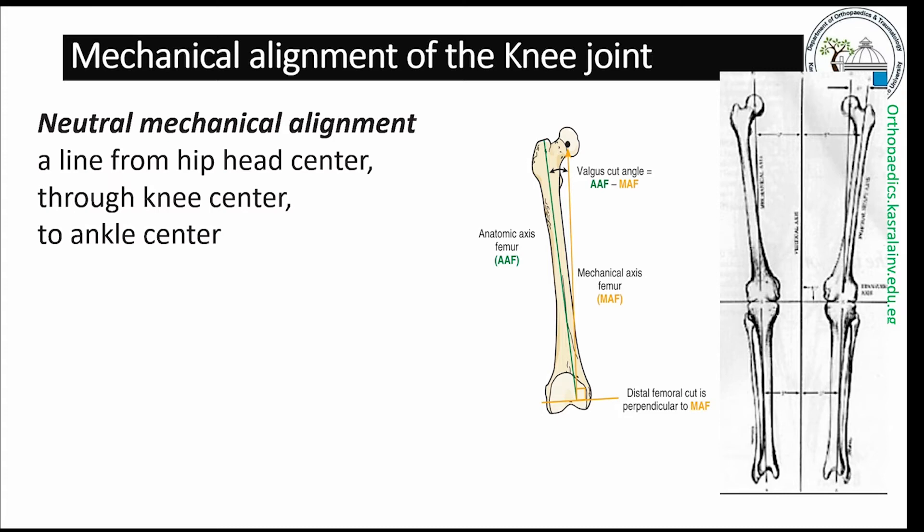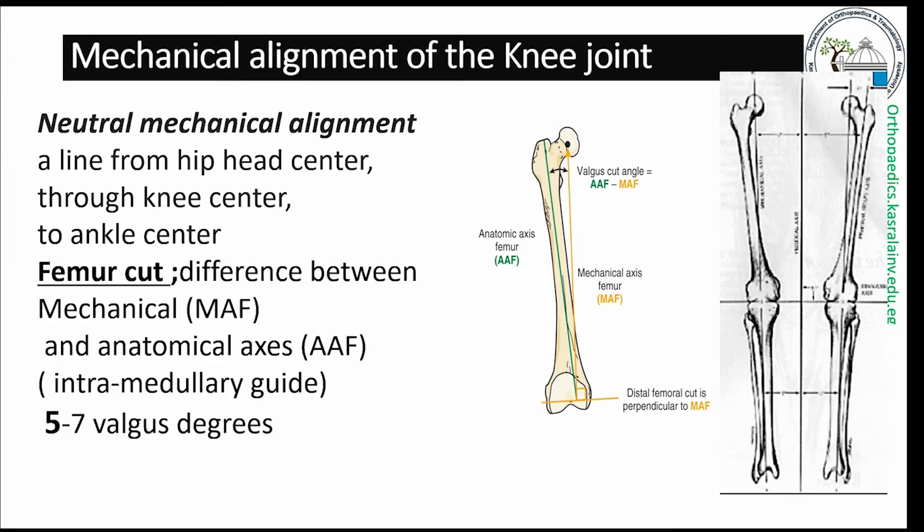To allow for proper distribution of body weight stresses, we need the femoral implant to be perpendicular to the mechanical axis. Since our intramedullary alignment guides use the anatomical axis, to compensate for this difference, a 5 to 7 degree valgus orientation cut is made to obtain the required alignment.